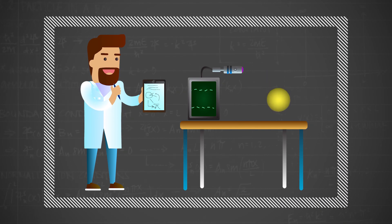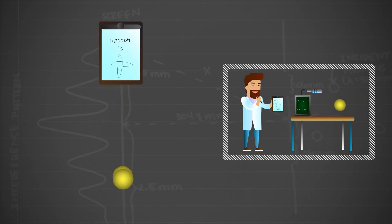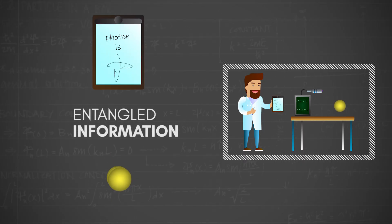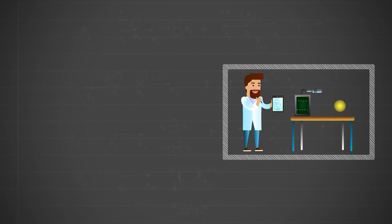In Wigner's thought experiment, he envisions a friend working in a separate laboratory from his own. His friend is tasked with measuring the polarization state of a single photon and recording the result. To an observer outside of the lab, the friend's measurement is a unitary interaction that leaves the photon and the friend's record in an entangled state. The recorded state and the polarization state of the photon are in effect the same information.